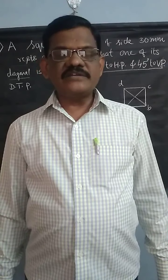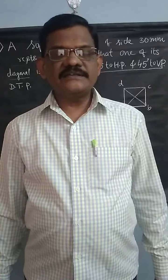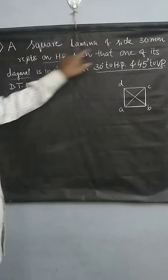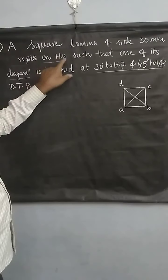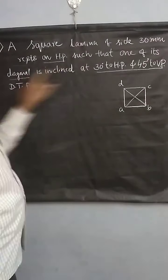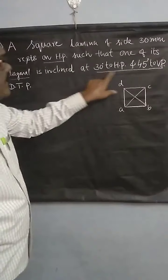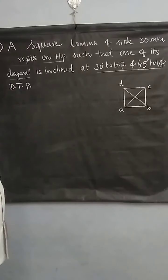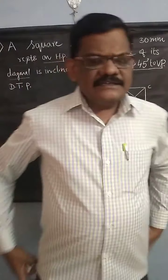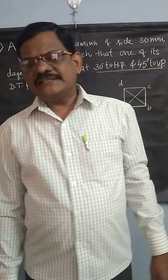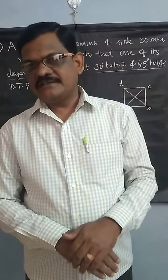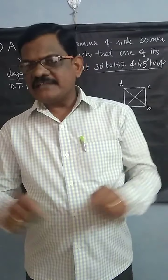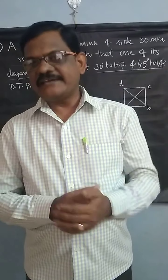In this video, I am going to explain how to draw the solution for a square lamina. Look at the statement of the program. A square lamina of size 30 mm rests on HP such that one of its diagonals is inclined at 30 degrees to HP and 45 degrees to VP. Draw the projections. The inclination of the surface of the lamina is not given. Both HP and VP angles are given with respect to the diagonal.